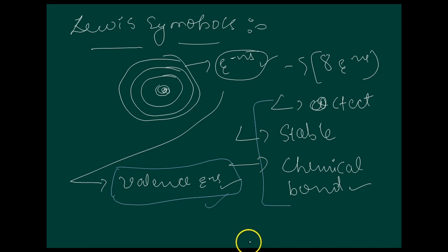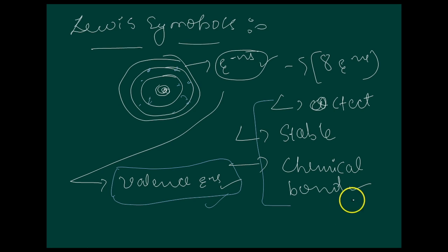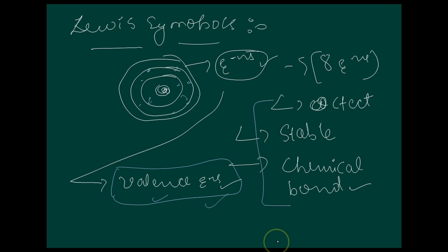The inner shell electrons are well protected and are generally not involved in the combination process. The outer shell electrons — called valence electrons — can be represented using a simple notation introduced by the American chemist Lewis. These notations are called Lewis symbols. I will give you examples for Lewis symbols.